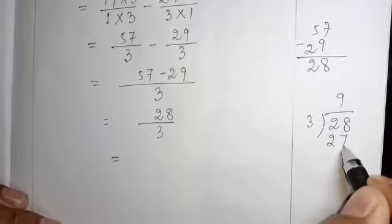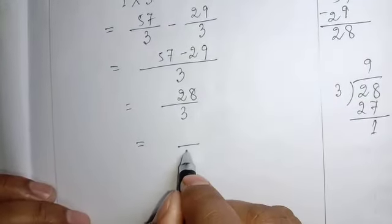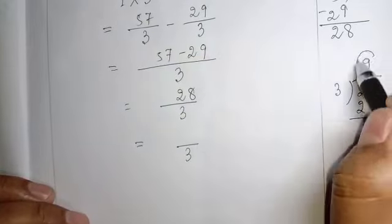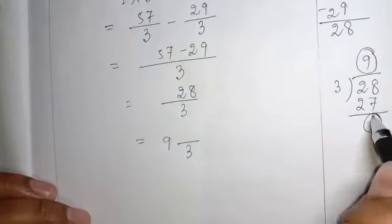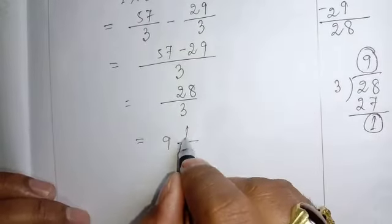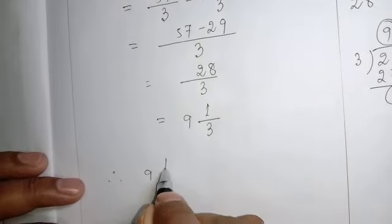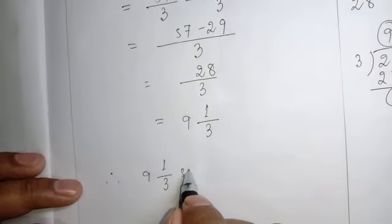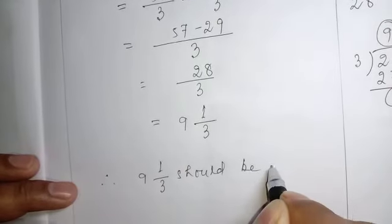3, 9 or 27, 1. This 3 denominator, it will be same. This quotient, we will write it here. This remainder, we will write on the top. Therefore, 9, 1 by 3 should be added.